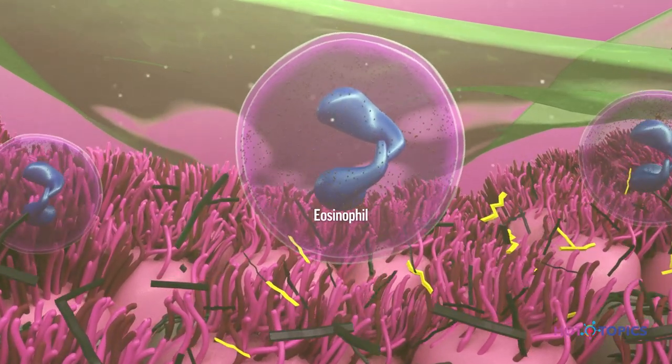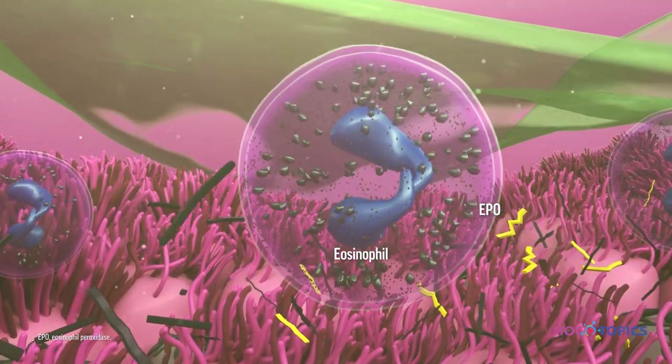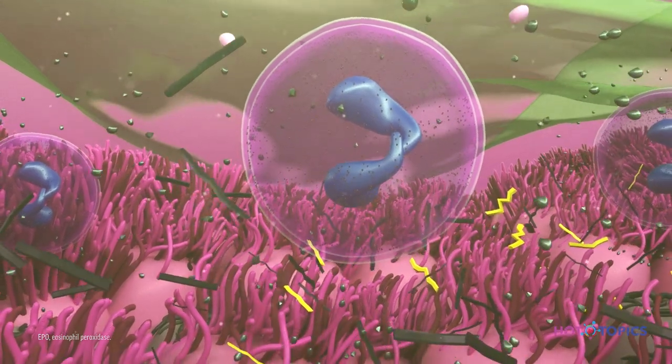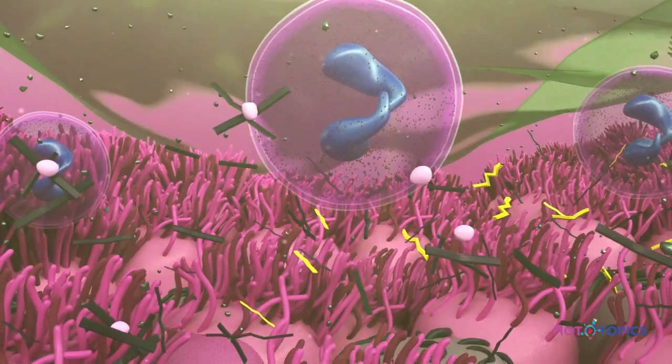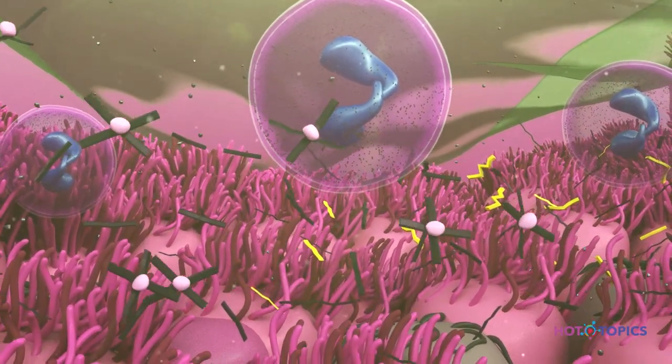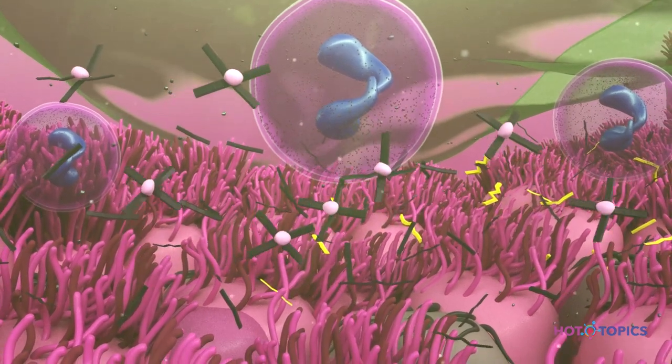Finally, eosinophil proteins, including eosinophil peroxidase, cause mucin cross-linking secondary to oxidation, resulting in a more viscous gel that is difficult to expel.